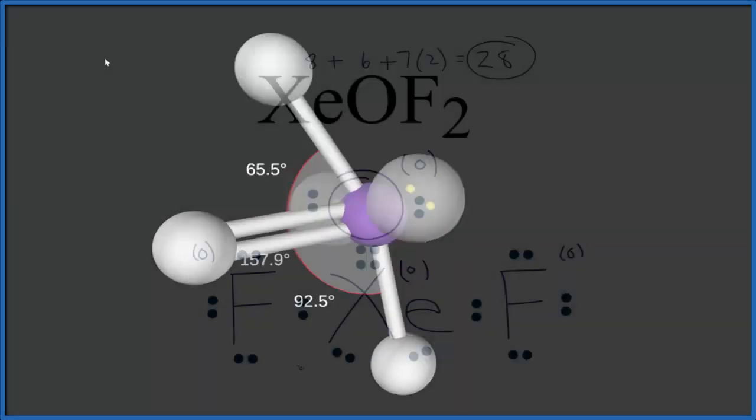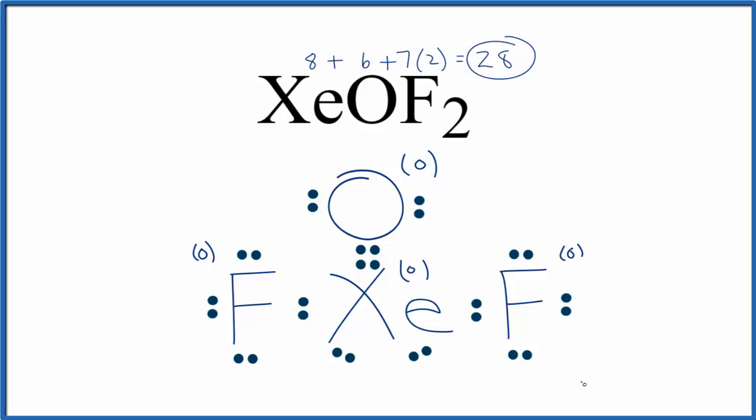Back to our Lewis structure. So because we have our formal charges of 0 here, this is the most likely or best Lewis structure for XeOF2. This is Dr. B. And thanks for watching.